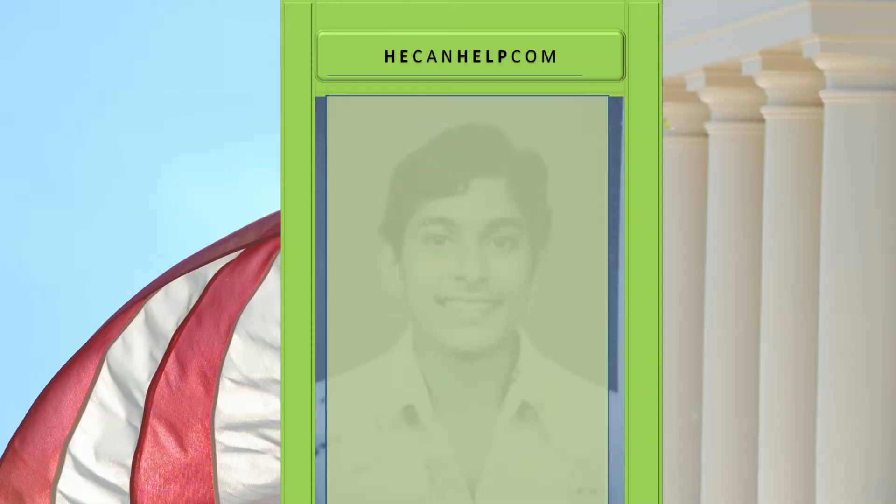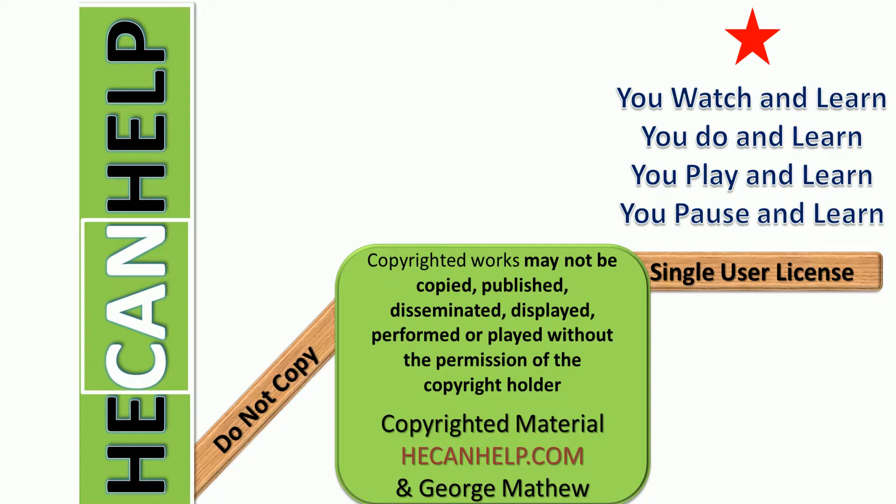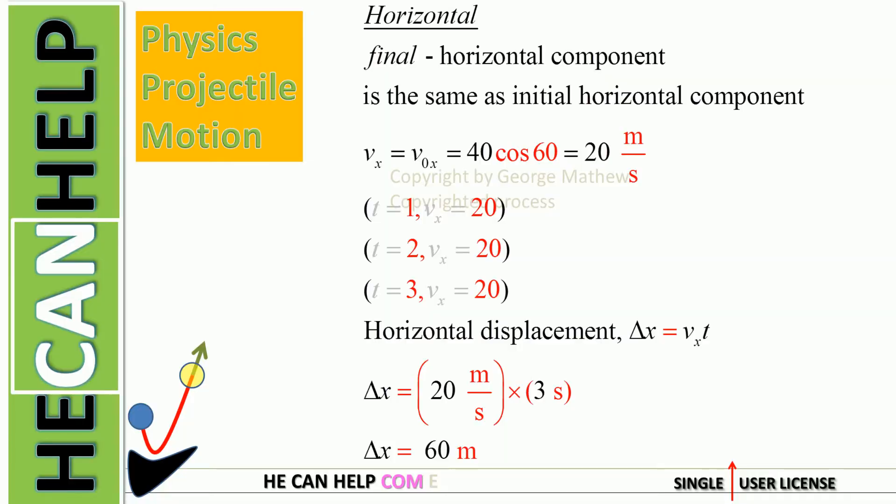We have 40 meters per second and the angle is 60 degrees. So drop a perpendicular to the horizontal and this becomes our horizontal component. Because the hypotenuse is given 40 and the angle with respect to the horizontal is 60, we can find what this side is - the adjacent side to 60. This becomes vx.